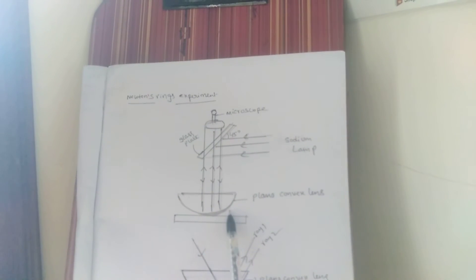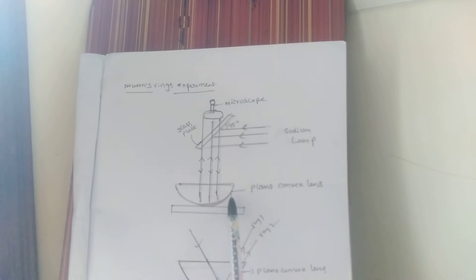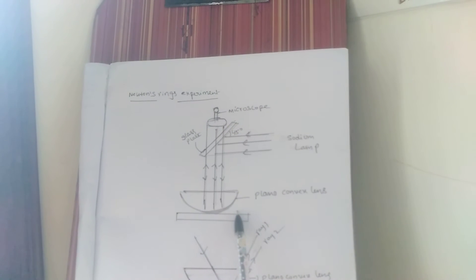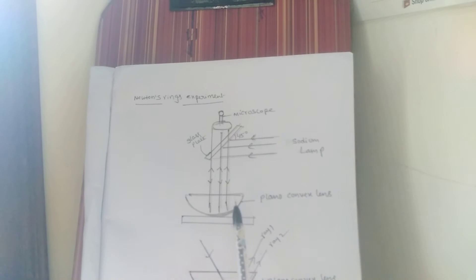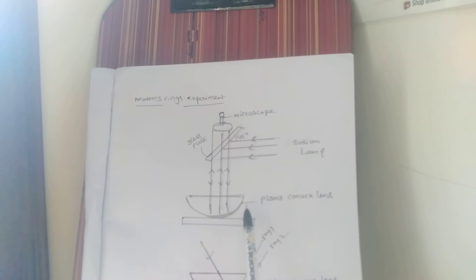These bright and dark points around the point of contact form rings called Newton's rings. Let's see how these Newton's rings are formed.